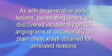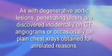As with most degenerative aortic lesions, penetrating ulcers are discovered incidentally on CT angiograms or occasionally on plain chest x-rays obtained for unrelated reasons. The natural history of these lesions is ill-defined. There is no good evidence to recommend any specific size criteria for repair of asymptomatic lesions, especially given the fact that the sizing of these lesions has been variable in the literature, with some reporting the overall wall-to-wall diameter of the ulcer including the aorta, and others reporting just the depth of the ulcer.